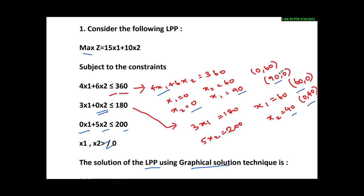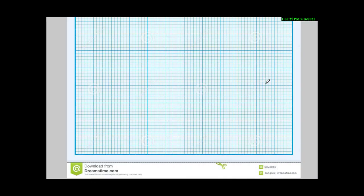So note down all four points: (0, 60) and (90, 0) belong to equation 1; (60, 0) belongs to equation 2; and (0, 40) belongs to equation 3. Now we have to depict these points on a graph.